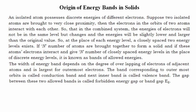The band corresponding to outermost orbits is called the conduction band and the next inner band is called the valence band. The gap between these two allowed bands is called the forbidden energy gap or band gap, that is EG.